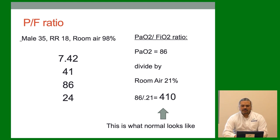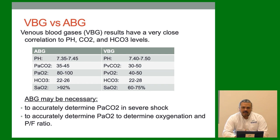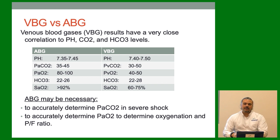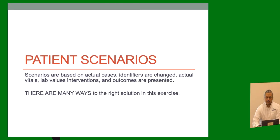VBG versus ABG. VBGs have pretty close correlation for acid-base — the pH, CO2, and bicarb. The only concern with VBGs is you won't get a great oxygenation reading; for that, you may need an ABG. But for the most part the difference is negligible and it saves your patient a poke. Sometimes poking a patient who doesn't really need an ABG can inadvertently make them alkalotic from breathing fast. So for something like renal failure or a DKA patient, you can probably make do with a VBG.